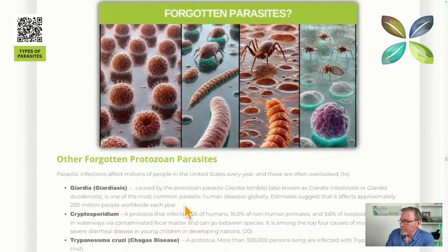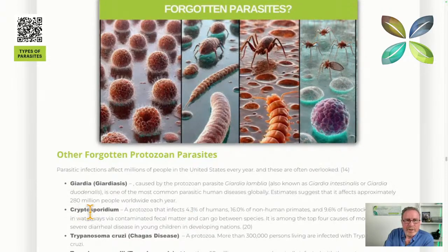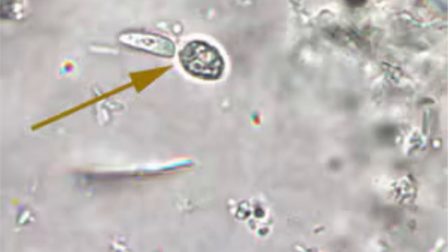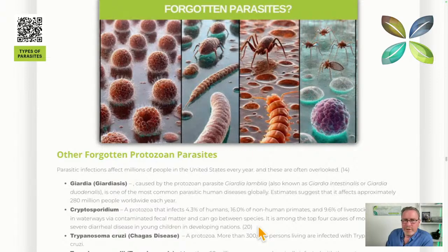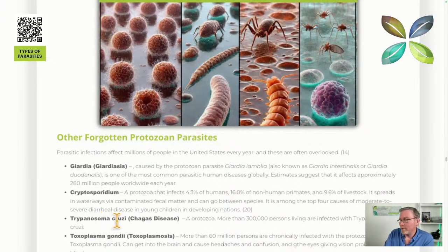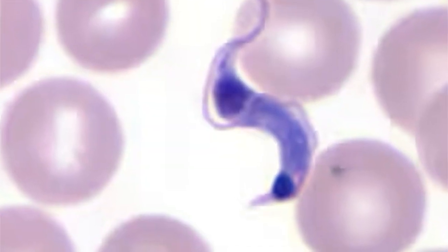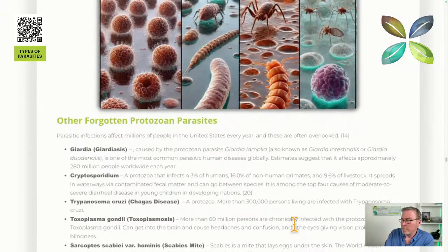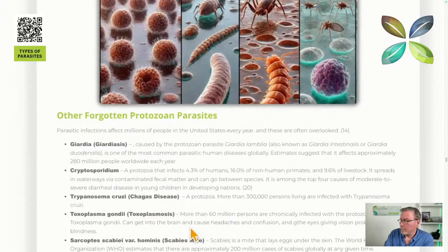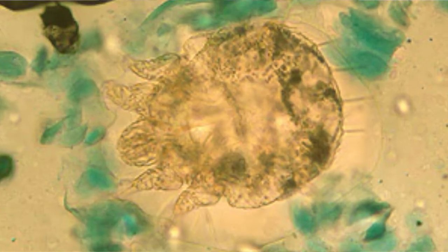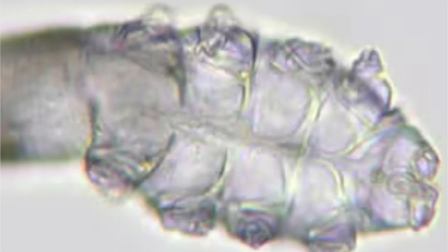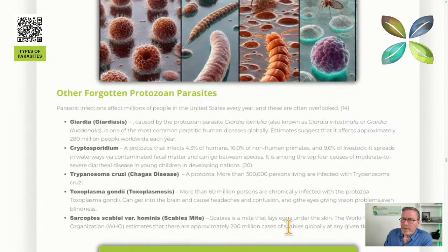Giardia is one of the most common parasites globally, affecting 200 million people every year and often picked up in water. Cryptosporidium is another protozoa commonly picked up by people around cattle and livestock. Trypanosoma cruzi causes Chagas disease, affecting 300,000 people. Toxoplasma gondii — toxoplasmosis — affects more than 60 million people and can get into the brain, causing headaches and confusion. Scabies mite, though not a protozoa, causes itching and often infects around the genital area.